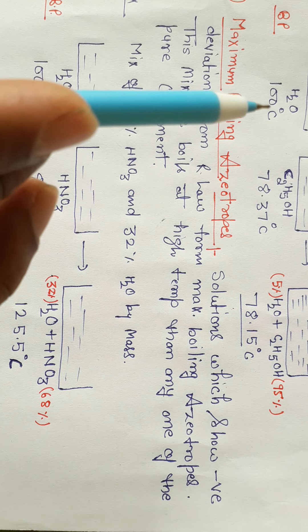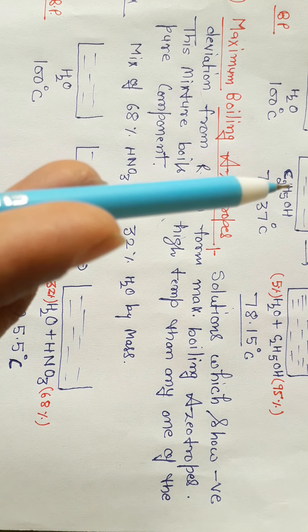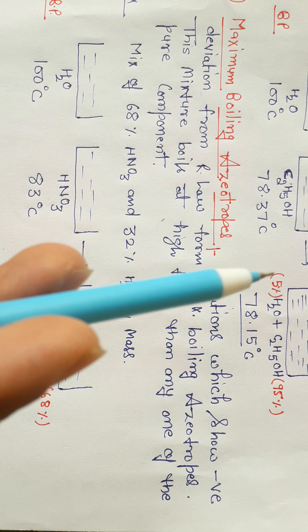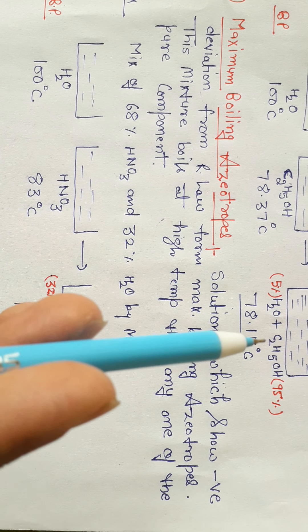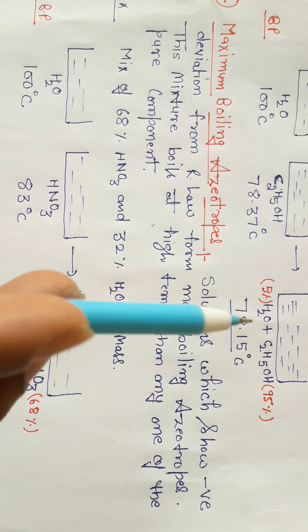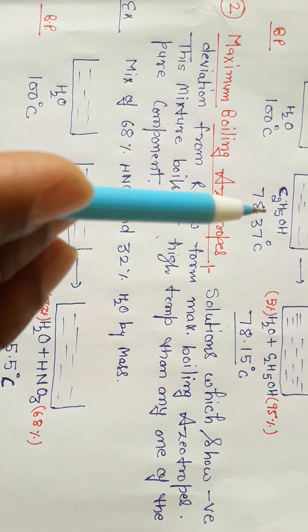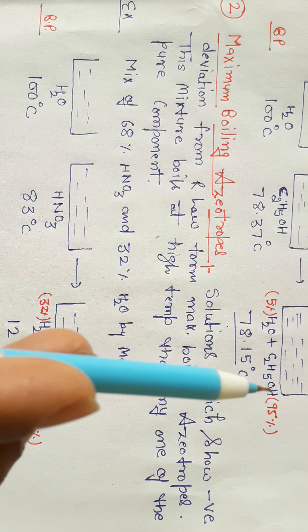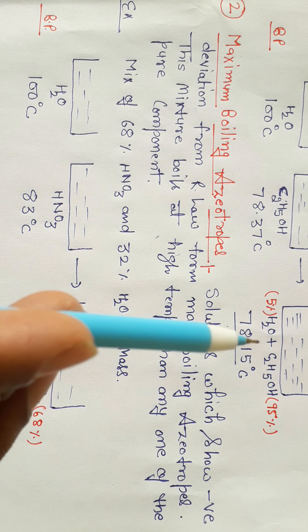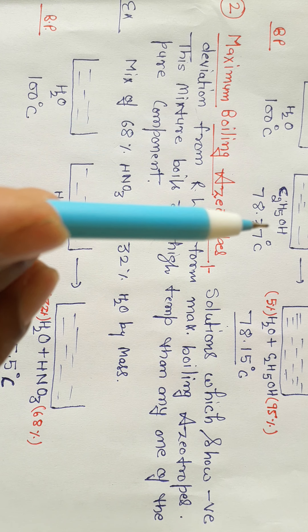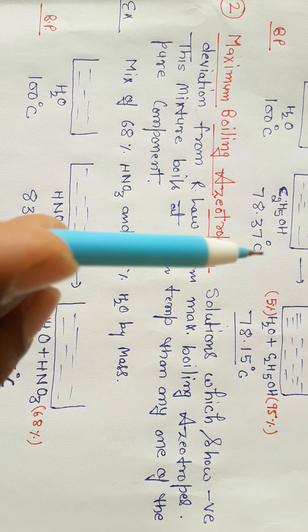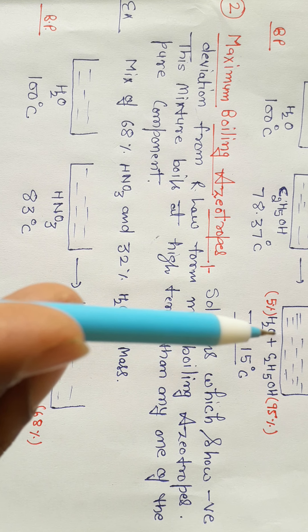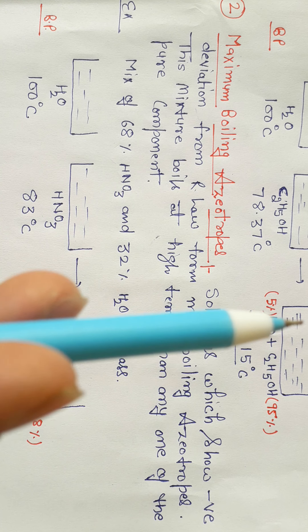We know that ethanol and water show positive deviation. The boiling point is less than either pure component's boiling point. The reason is that the water-water interaction and ethanol-ethanol interaction are stronger, but when we mix them, the ethanol-water interaction becomes weaker compared to water-water and ethanol-ethanol interactions, so we get positive deviation.